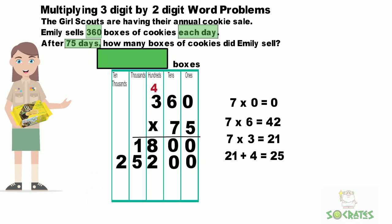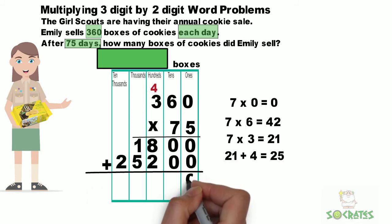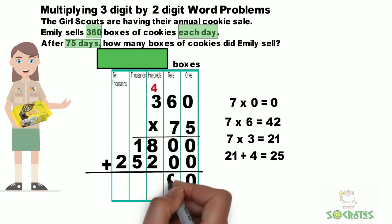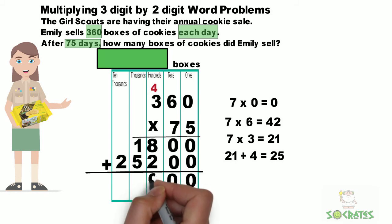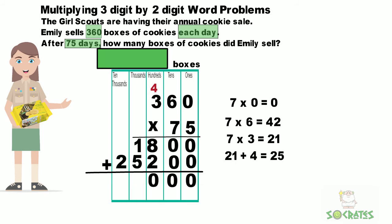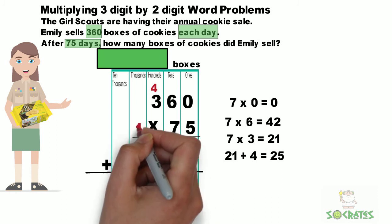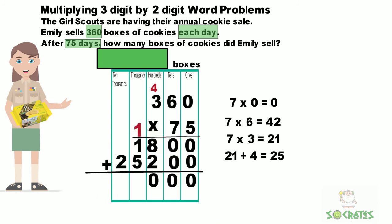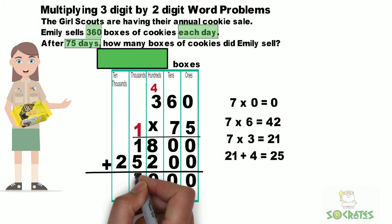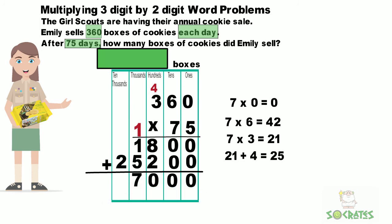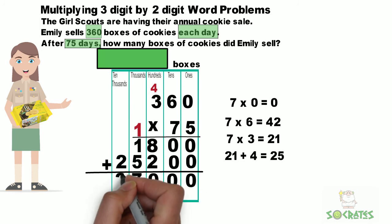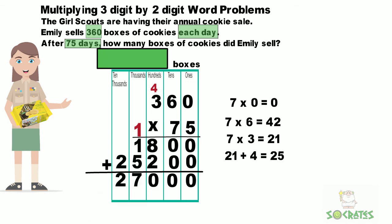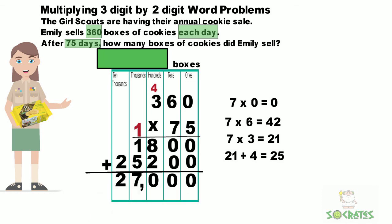Now we just need to add what we got from the ones and the tens. Zero plus zero equals zero. Zero plus zero equals zero. Eight plus two equals ten — put a zero down and carry the one. One plus one plus five is seven, and then a two. So our answer is 27,000 boxes of cookies.